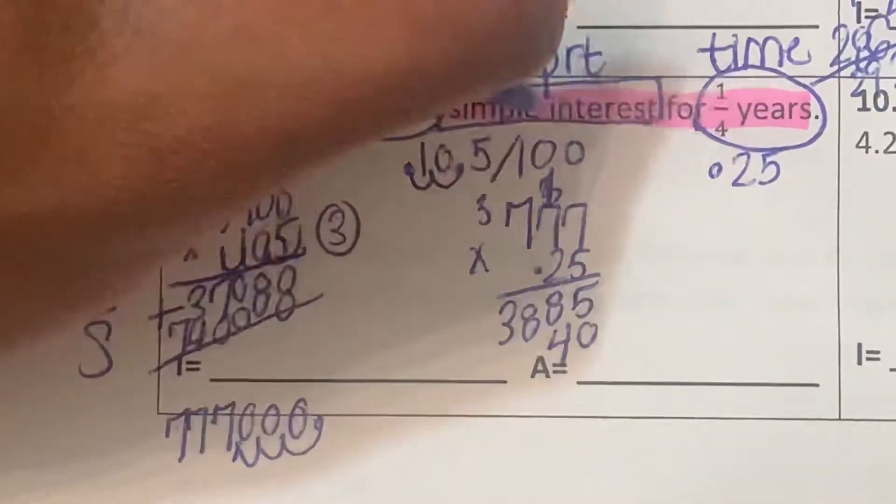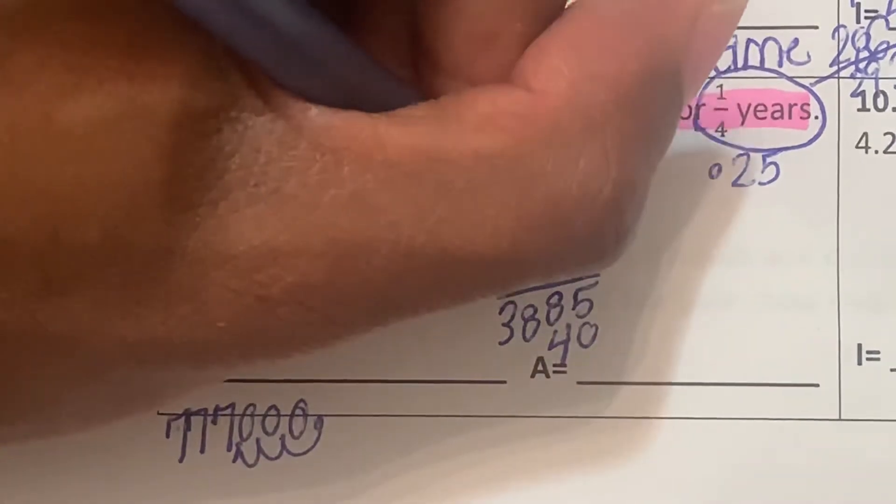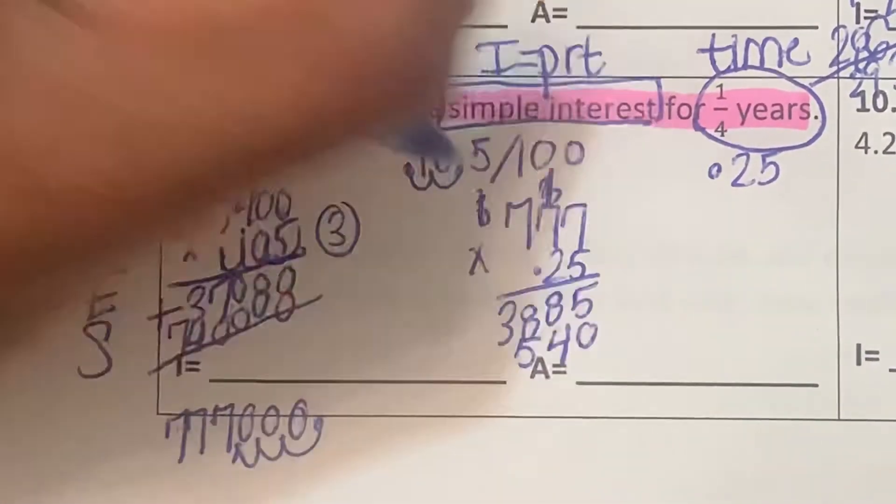Put a 0 for the hundredths place. 2 times 7 is 14, carry the 1. 2 times 7 is 14. 2 times 7 is 14 plus 1 is 15, carry the 1. 2 times 7 is 14 plus 1 is going to be 15.